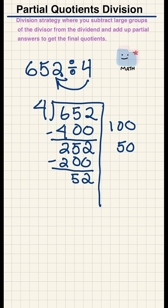Now I'm left with 52. Four groups of 10 is 40, so let's subtract that out. 52 minus 40 is 12.